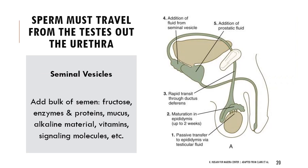The seminal vesicles provide the bulk of what is considered semen. Semen is not just sperm — there's fructose, sugars, enzymes and proteins, mucus, and alkaline material. That alkaline material is important because the vagina is extremely acidic; the alkaline and acidic together neutralize and protect the sperm. There are also vitamins and different signaling molecules — a lot of material in semen to protect the sperm on its journey.